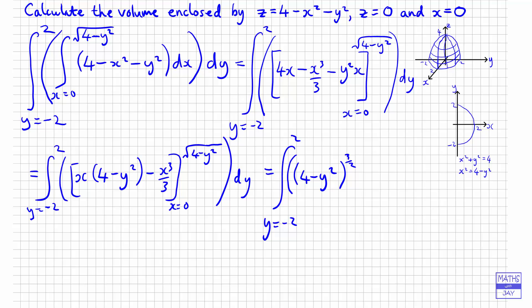So that's because x is 4 minus y squared to the half, and we're multiplying it by 4 minus y squared. And then, substituting in the square root of 4 minus y squared and raising it to the power of 3 also gives us 4 minus y squared to the 3 over 2. And that's over 3.